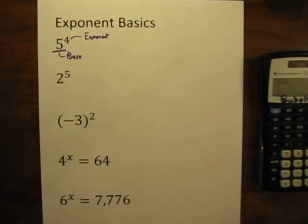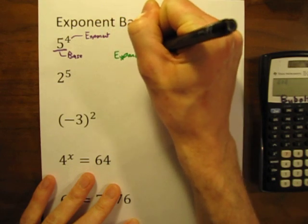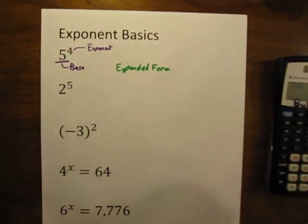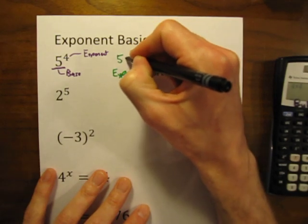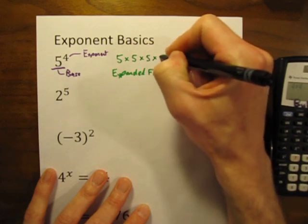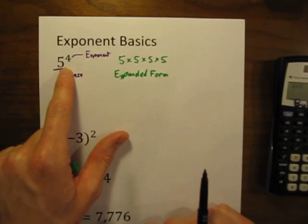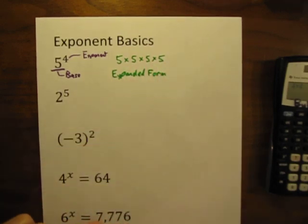A lot of times you'll be asked to write something like this in an expanded form. In expanded form, what this would mean is simply 5 times 5 times 5 times 5. 5 to the 4th power just means we're going to be multiplying 5 by itself 4 times. So that's what it would mean in expanded form.